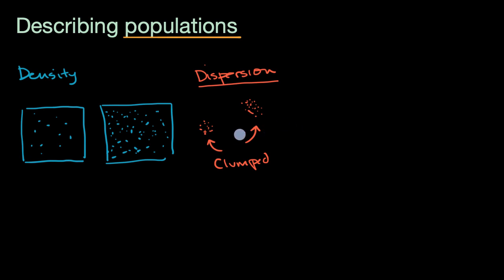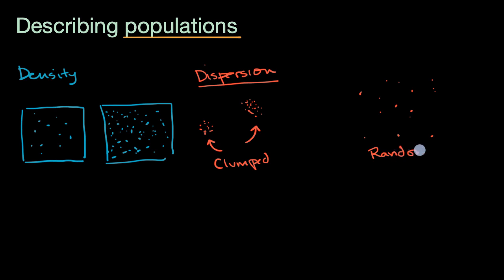At the other extreme of dispersion, you could have random dispersion, where there's really no rhyme or reason for where individuals are found. Sometimes they're close together, sometimes members of a population are further apart. Unless there's a good reason to clump or be organized, you'll often see random dispersion — for example, how many plants spread their seeds randomly through the wind, or animals eat fruit and drop it randomly.